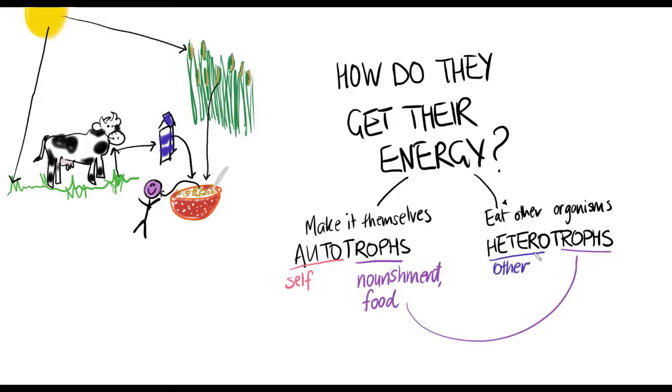And hetero means other. So they rely on themselves to get nourishment versus eating other things to get nourishment.